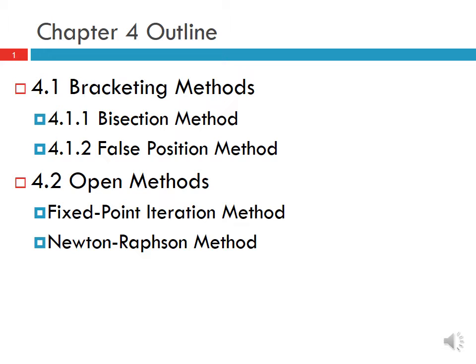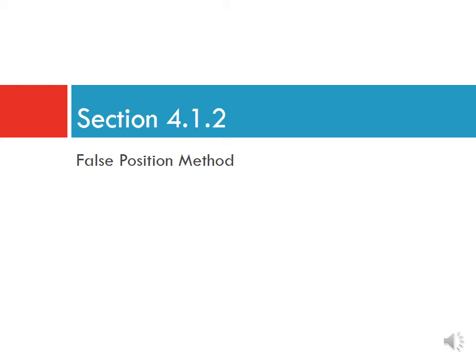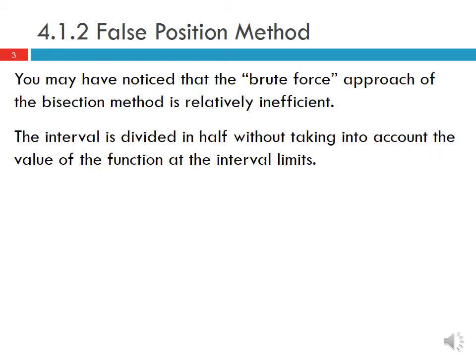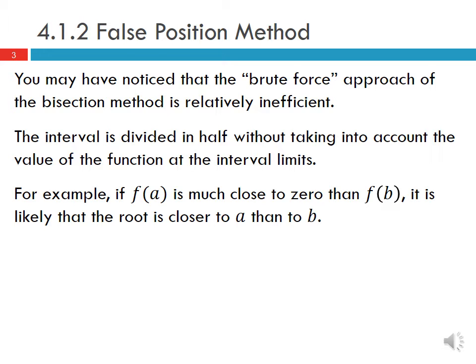You may have noticed that the brute force approach of the bisection method is relatively inefficient. The interval is divided in half without taking into account the value of the function at the interval limits. For example, if f(a) is much closer to zero than f(b), it is likely that the root is closer to a than to b, but the bisection method does not take advantage of this fact.